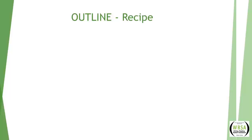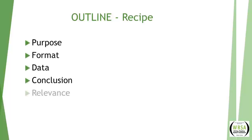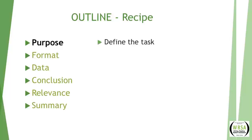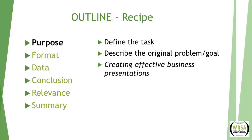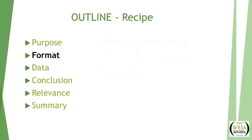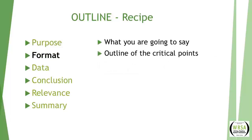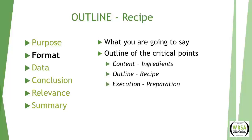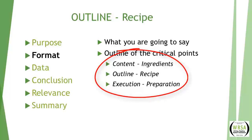The outline is the recipe of your presentation. I found many components of an effective presentation, which I have distilled down to six elements: purpose, format, data, conclusion, relevance, and summary. While there are many different and very good ways to prepare a presentation, I have found this formula to be very effective and used it to create this very presentation. The purpose just means define the task — describe what the original problem or task is and what you've been asked to do. I said I'm here to talk about creating effective business presentations. Format means tell them what you're going to say — the outline or agenda of the critical things that will be covered. I said content or ingredients, outline or recipe, and execution or preparation. This, by the way, is half of my elevator speech for this presentation — the most important things to get across.